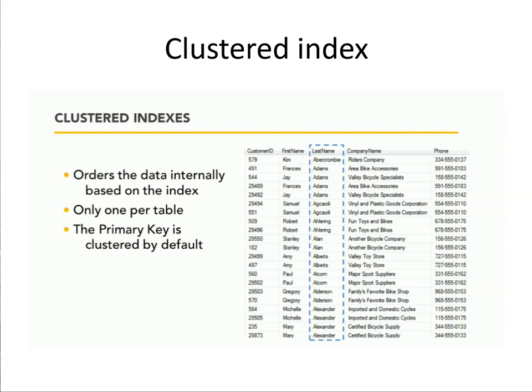Keep in mind that by default in SQL Server — and I want to be specific, this is not every DBMS — but in SQL Server, by default, the primary key will always get a clustered index. So as soon as you create a table and you define a primary key, a clustered index is created. Because the structure of the table is rearranged based on that clustered index, you can only have one clustered index per table.